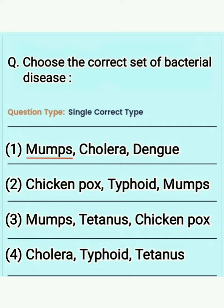The second option is chicken pox, typhoid, and mumps. Since mumps is a viral disease, this option is also eliminated. The third option is mumps, tetanus, and chicken pox — again eliminated because of mumps and chicken pox, which are viral diseases.